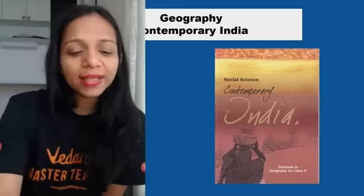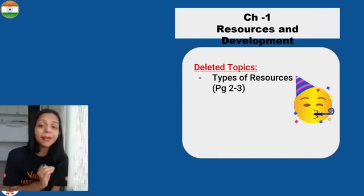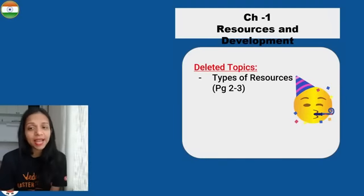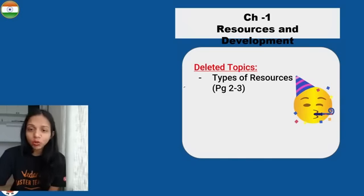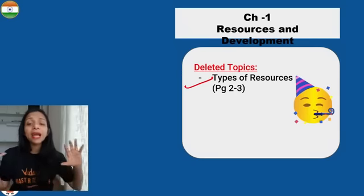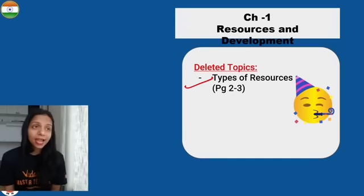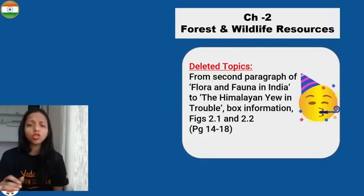If we talk about geography, first of all, the chapter of Resources and Development — the types of resources like renewable, non-renewable, biotic, abiotic, and potential — all of these are deleted. Which is sad, I think, because it was a lot of scoring. But if it is deleted, you can leave it.